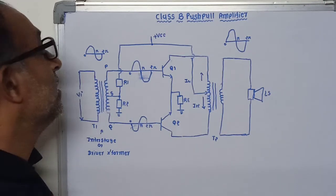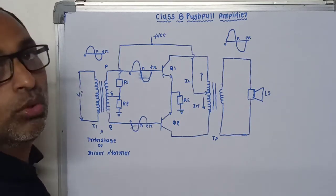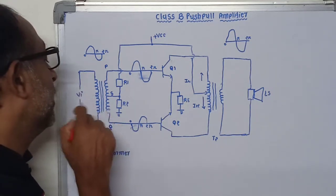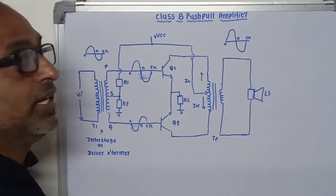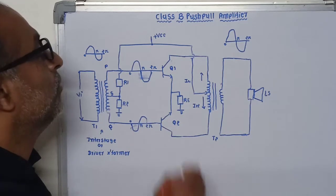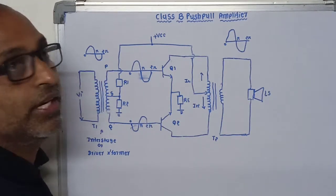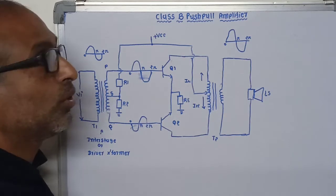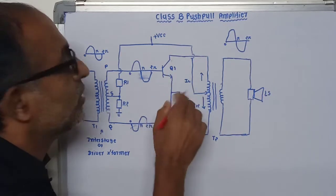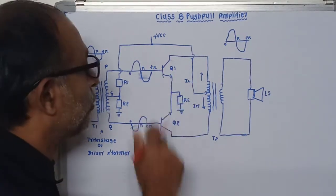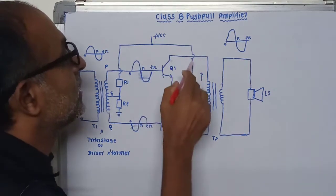Now let us see the working principle of this amplifier. When no signal is applied at the input terminal of the primary winding of transformer T1, both transistors Q1 and Q2 are operated in the cutoff region. Hence, no collector current is drawn, meaning no current is drawn from the plus VCC supply.